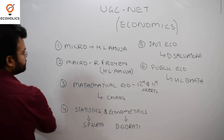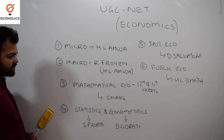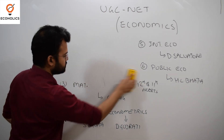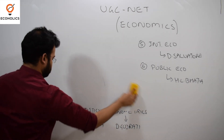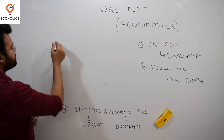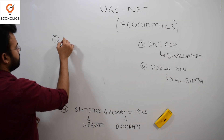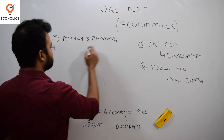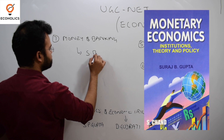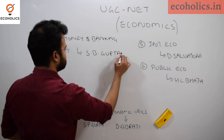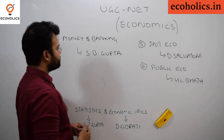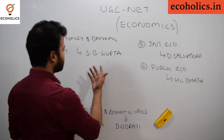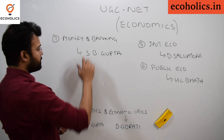The seventh topic is money and banking. If you want to take a screenshot of the board, you can do so now. For money and banking, the best book is S.B. Gupta. S.B. Gupta is like a small book, almost like a novel of around 200 pages — you can read it like a story. This is the best book for money and banking.